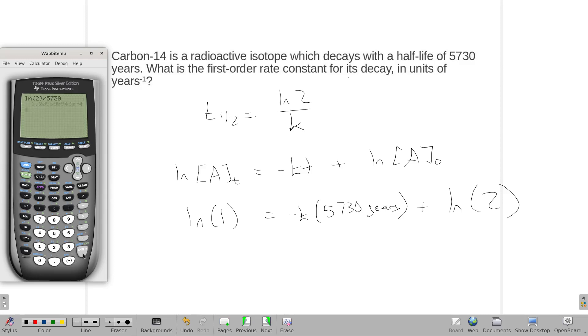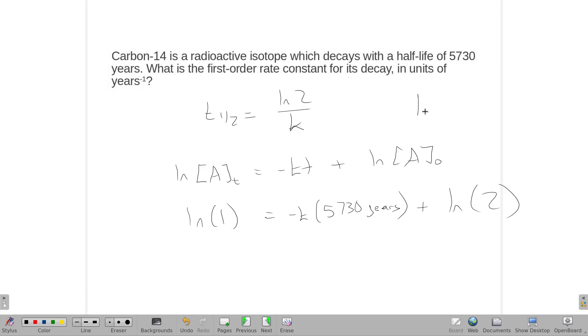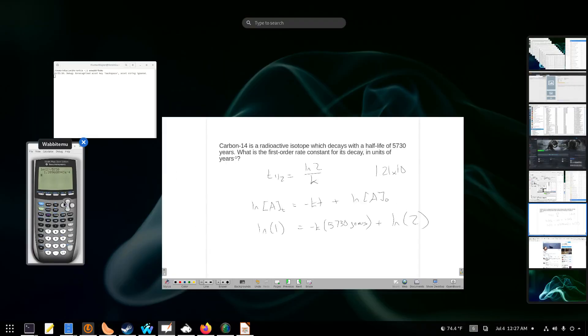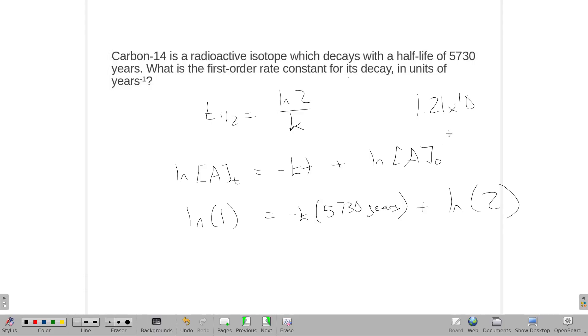And I get a k of 1.21 times 10 to the negative fourth per year.